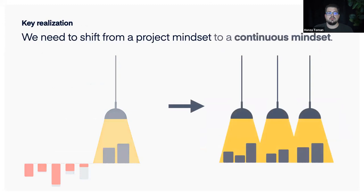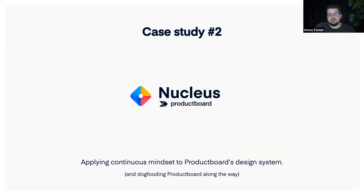We realized we needed to shift from a project mindset to a continuous mindset. This leads to case study number two: Nucleus, our design system at Productboard. I'll talk about how we apply a continuous mindset there. I'm not saying we have the best solution ever, but it is working for us, and I'll show you some examples, including how we use Productboard itself to manage the whole thing.